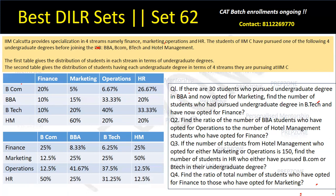The first table gives the distribution of students in each stream in terms of the undergraduate degree. For example, stream number one — let's say Finance — 20% of the Finance students have an undergraduate degree of BCom, then 10, then 10, and then 60. So the sum of all of these has to be 100. So 20 plus 20 is 40, plus 60 is 100.